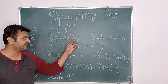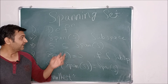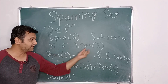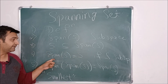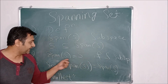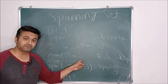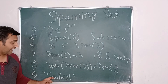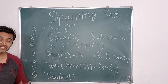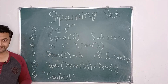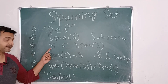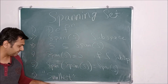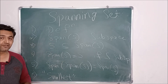Then we will see that if S is any subset of a vector space V, then its span is always a subspace. Then we will see that span of S always contains the set S. Then we will see that if S is a subspace, then if you take its span, you get the same subspace. Then we will see that span of span of S is again the span of S, and span of S is the smallest subspace that contains S. So if you take any other subspace that contains S, then it will also contain span of S.